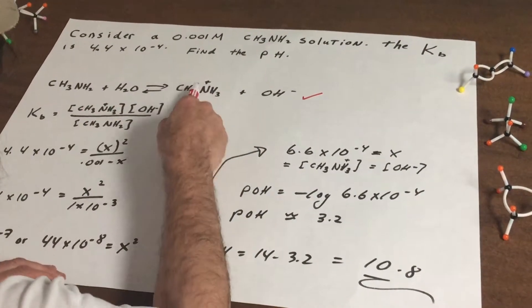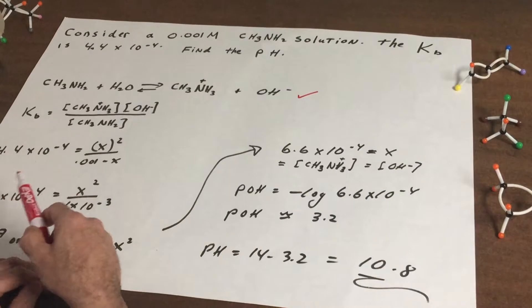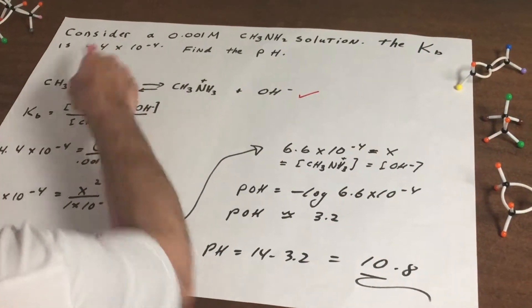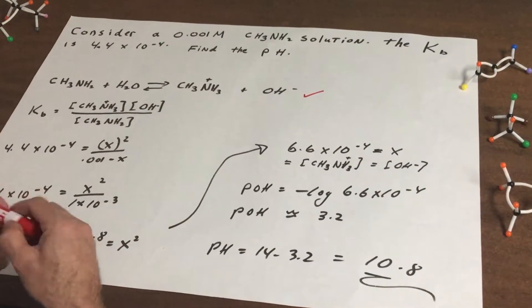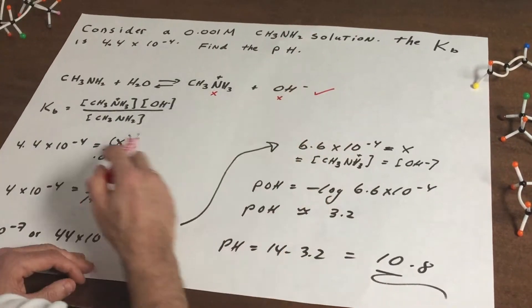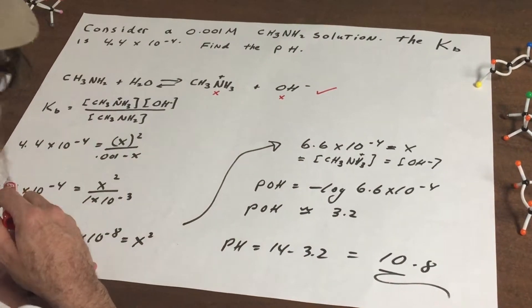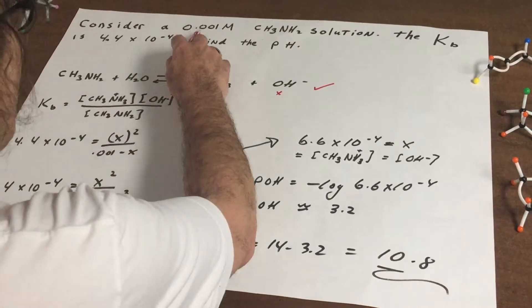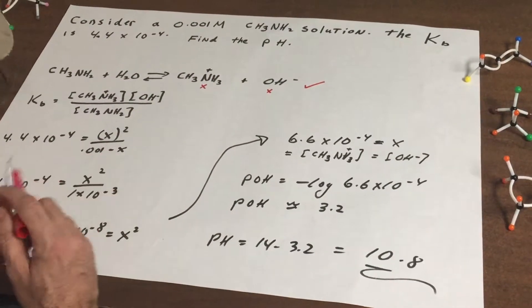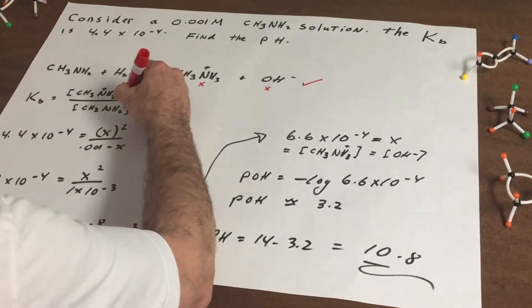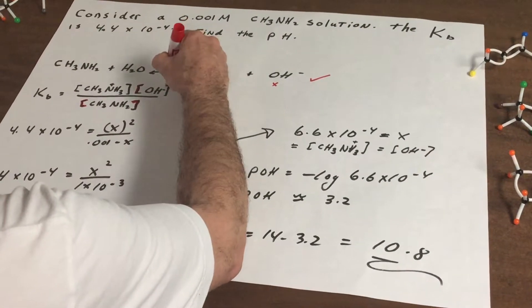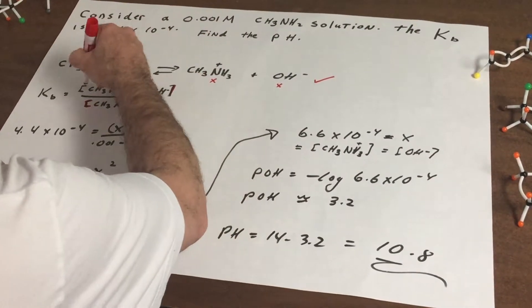Your second step is to write the Kb. Well that's easy - any K is simply the products divided by the reactants, don't include the water. Now we put the numbers in. We know the Kb is 4.4×10^-4. This is a one-to-one ratio so that means that this is X and this is X, so together they're both X squared. The bottom, we started with 0.001 and at equilibrium we're going to lose some of that so we're going to get 0.001 minus X. So when I put these brackets this stands for the equilibrium concentrations of everything.